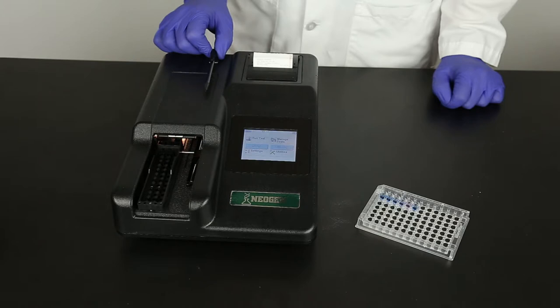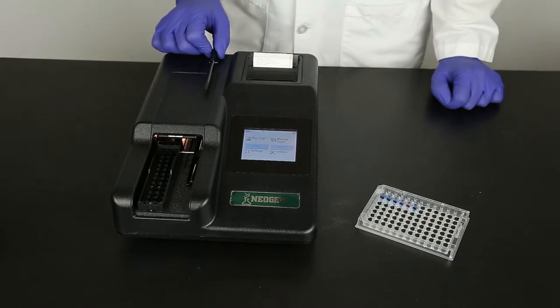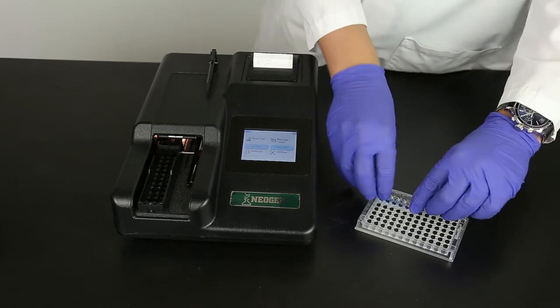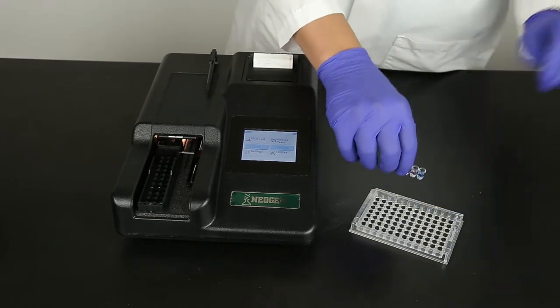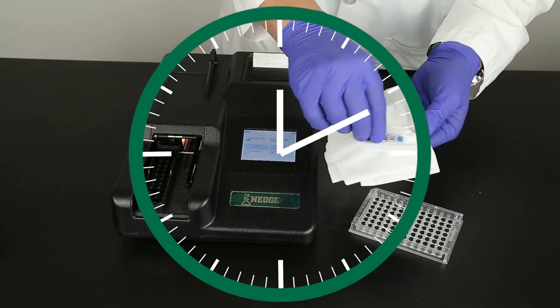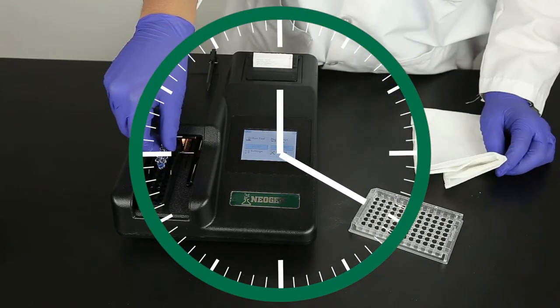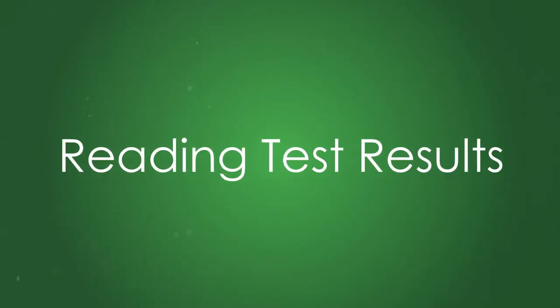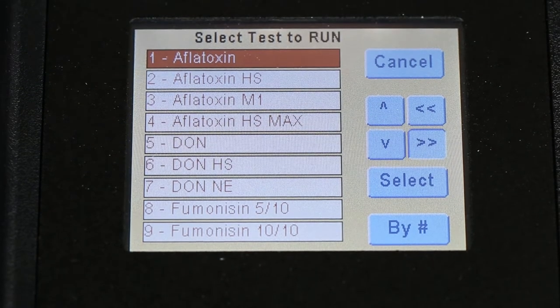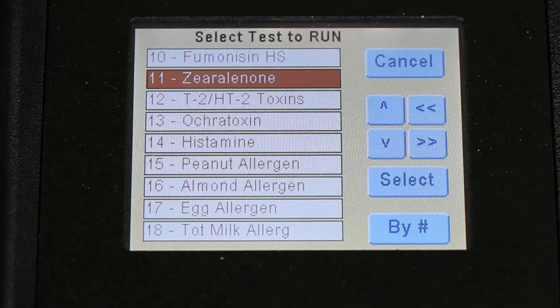You have up to 20 minutes to read the wells using the StatFax 4700 microwell reader or an equivalent microwell reader with a 650 nanometer filter. Strips read after 20 minutes will not give accurate results. Turn on the StatFax, scroll to select the test Zearalenone, and confirm the selection.